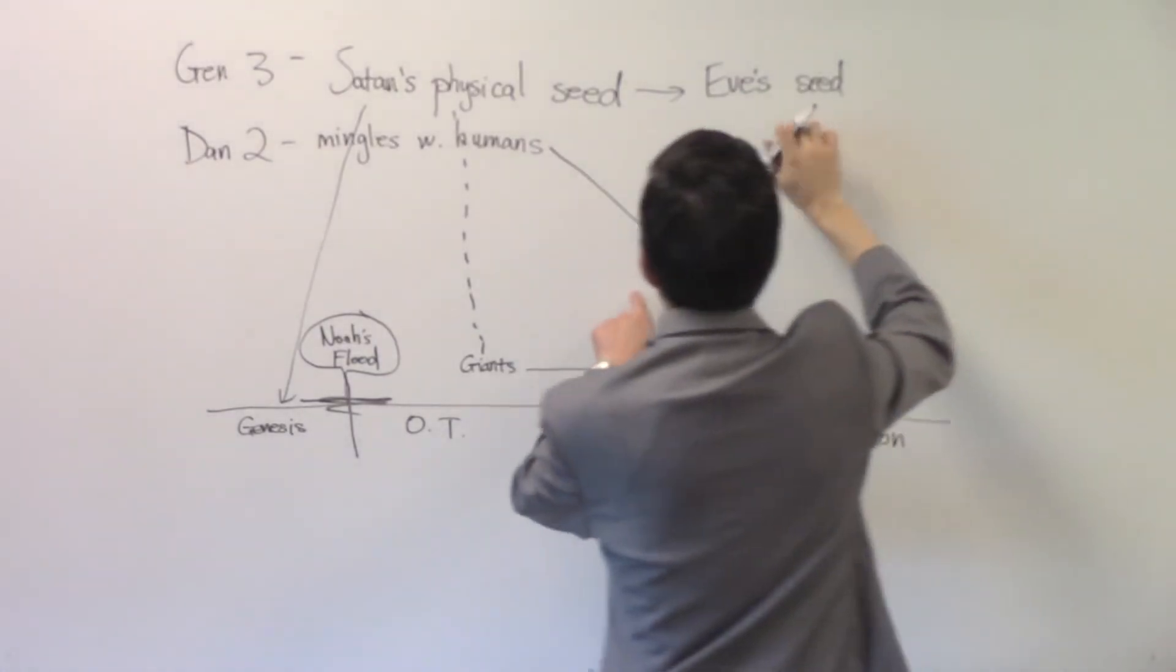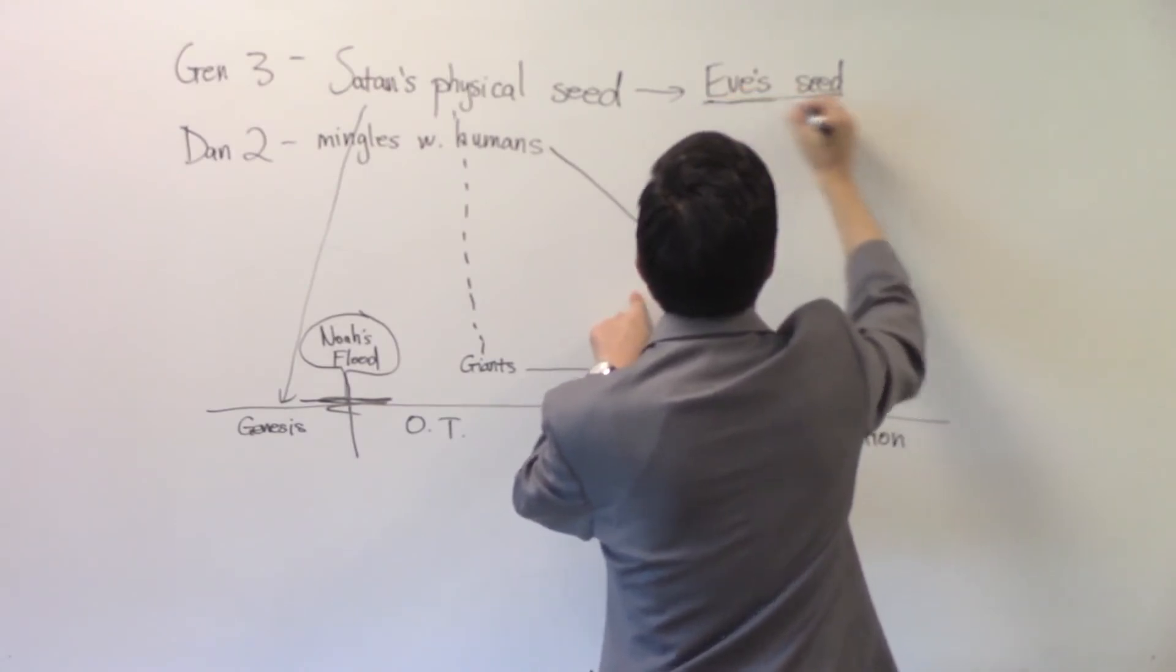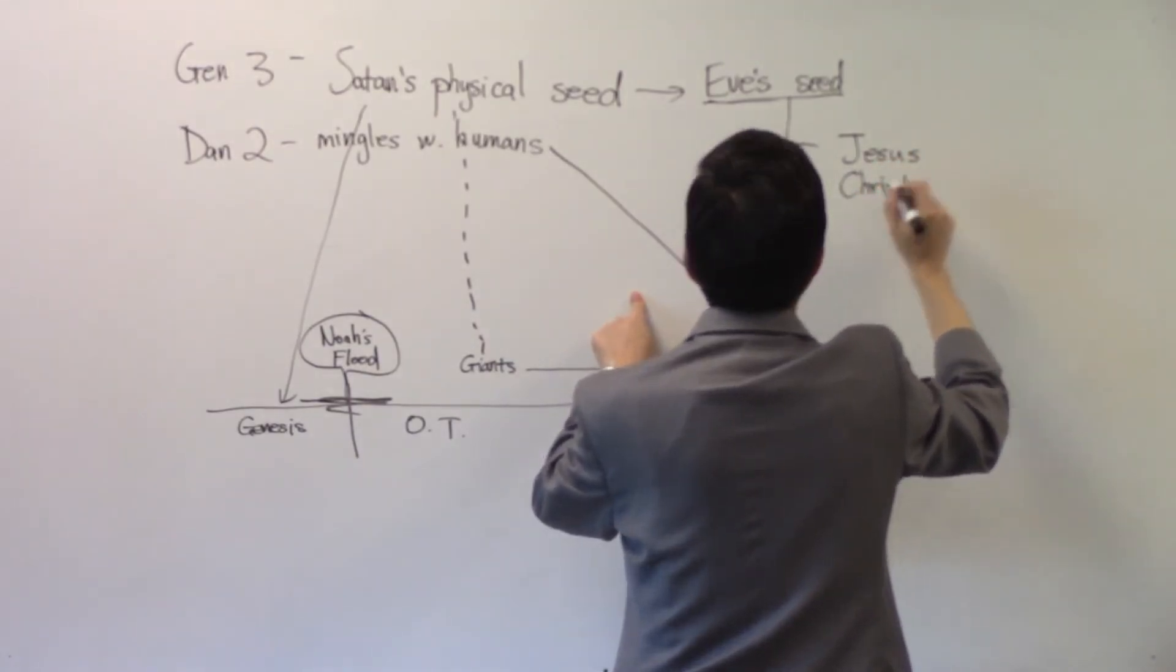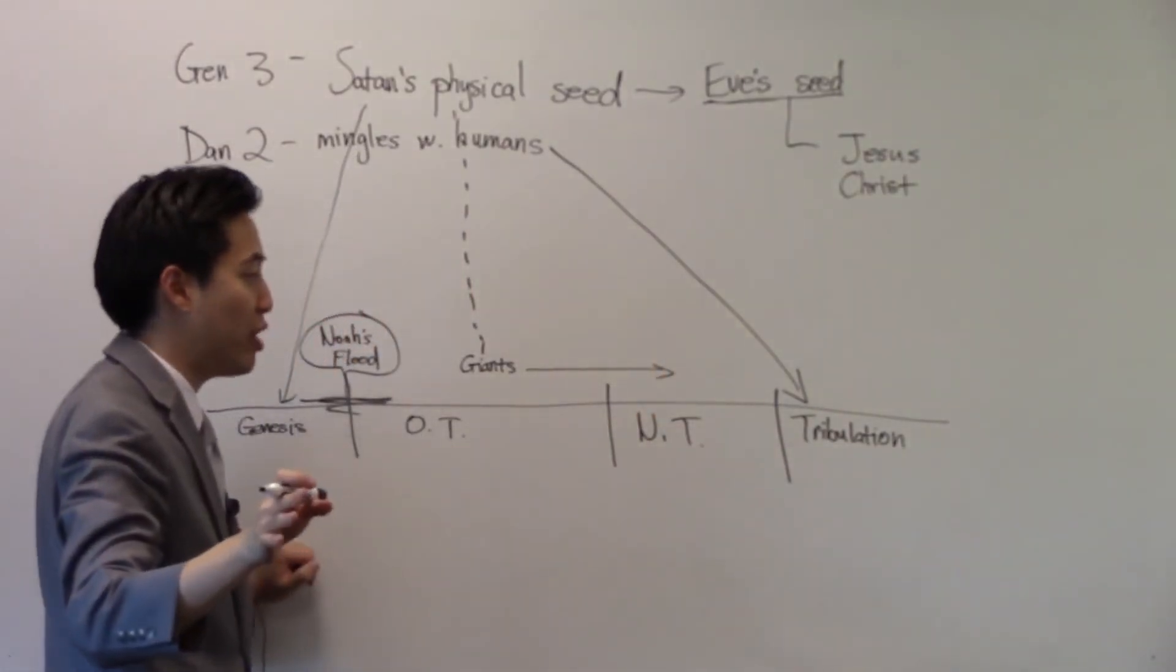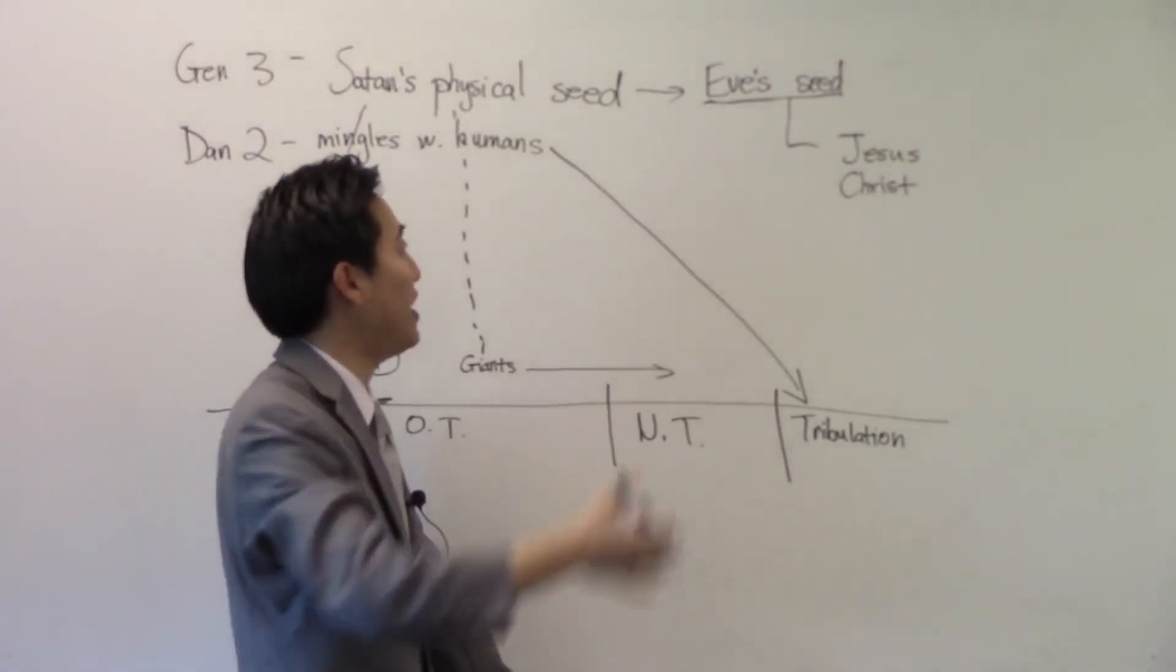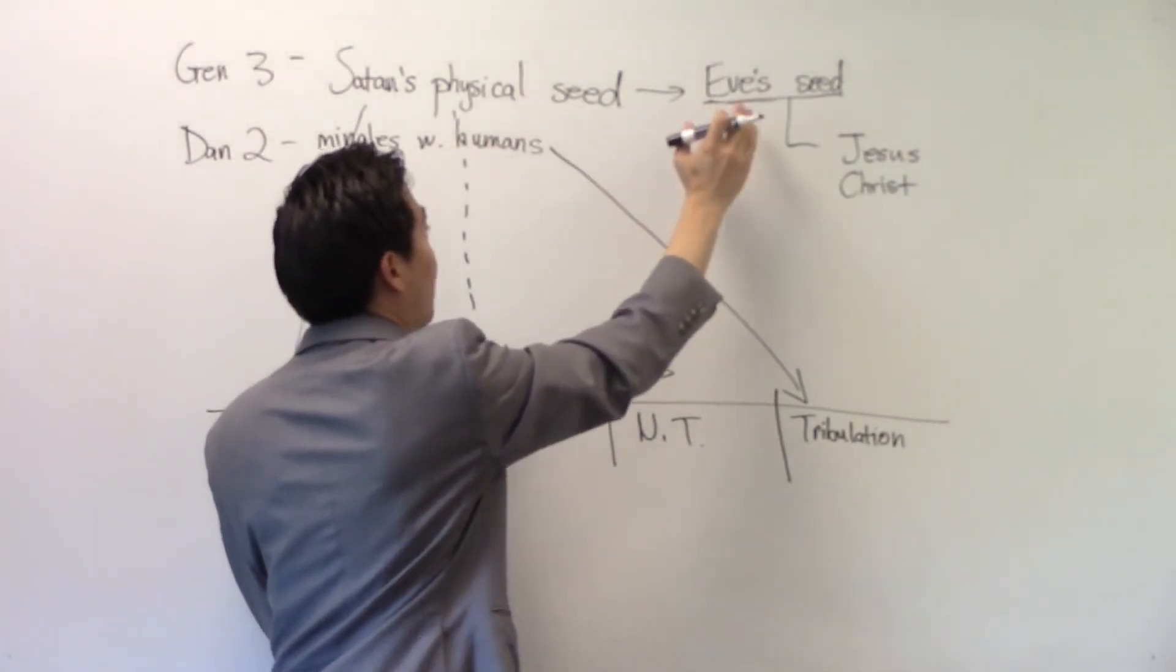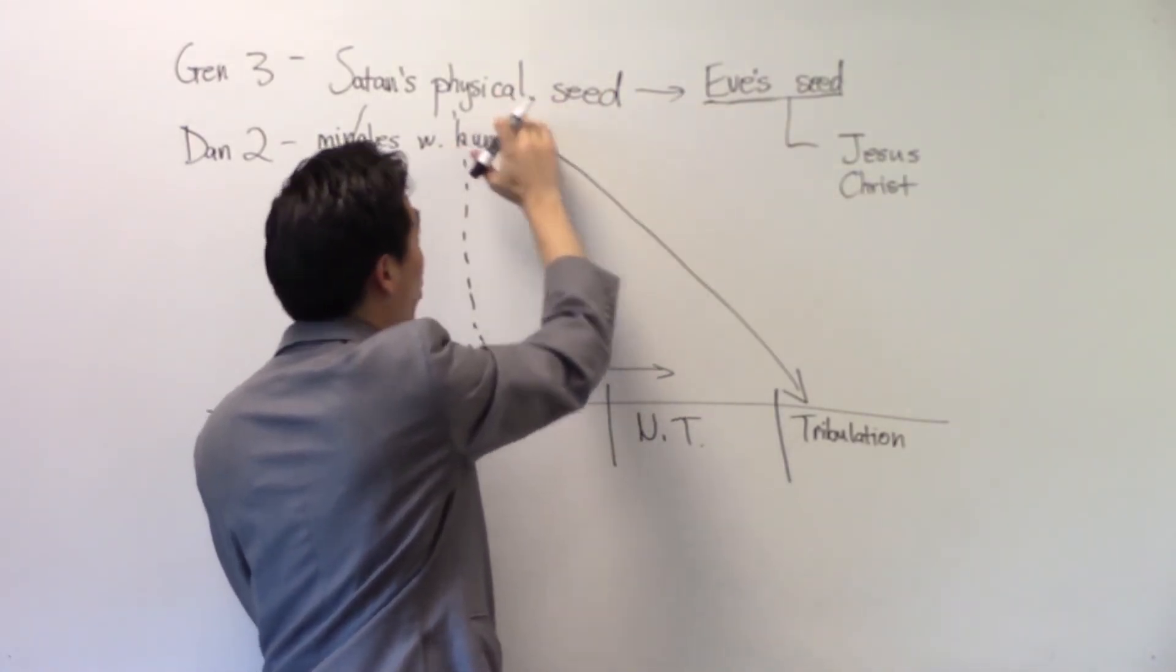Think about this. We know who the seed from Eve is, right? It's Jesus Christ, correct? Now, is that a literal physical seed? Absolutely. It's a literal physical seed. Following that context of that verse, Genesis 3, you can't just automatically make Satan's seed spiritualized, contrasted with Eve's seed as physicalized. You can't do that. It makes more sense by context. His seed versus her seed. If her seed is physical, his seed is physical as well. That just makes sense through the flow of context.